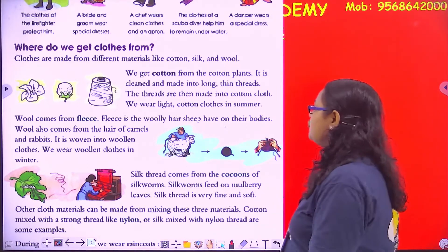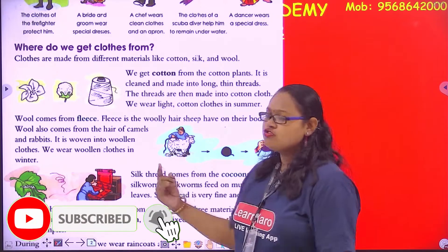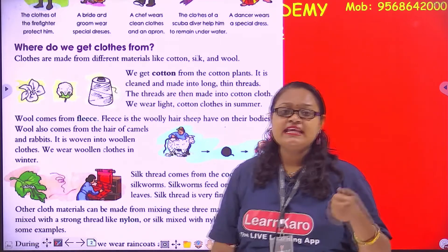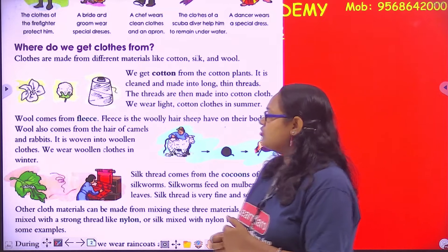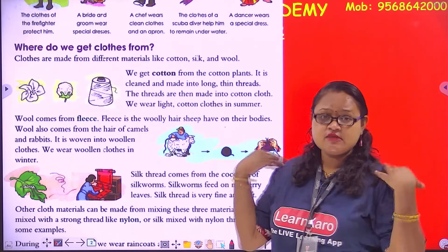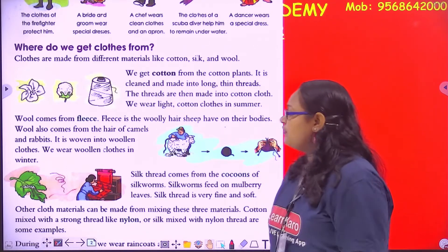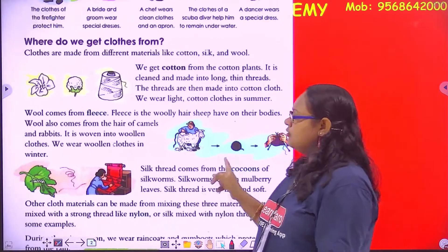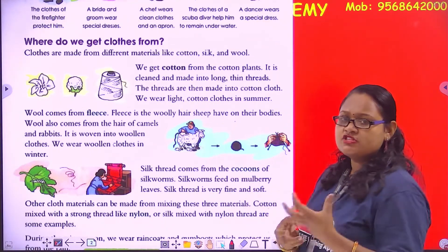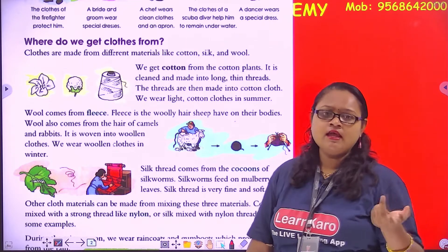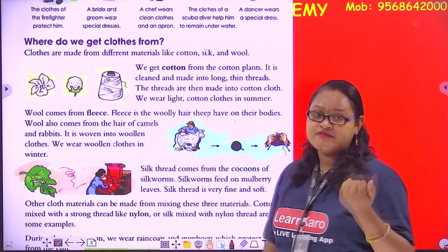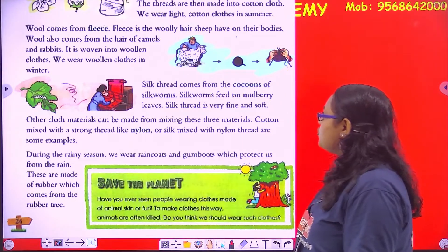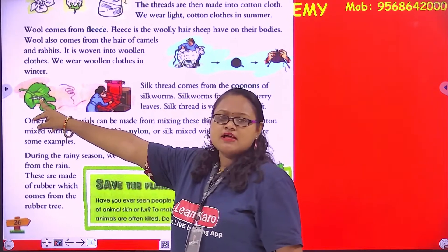Wool comes from the fleece — the woolly hair sheep have on their bodies. The fleece is cut and shaped. Wool also comes from the hair of camels and rabbits. It is then woven into wool. After the process, we get wool and from that we make sweaters and jackets, which we wear in the winter season.